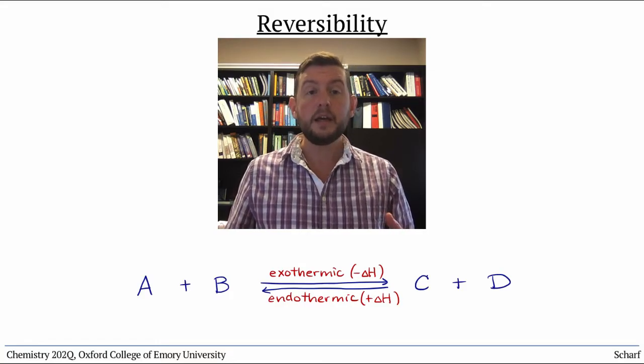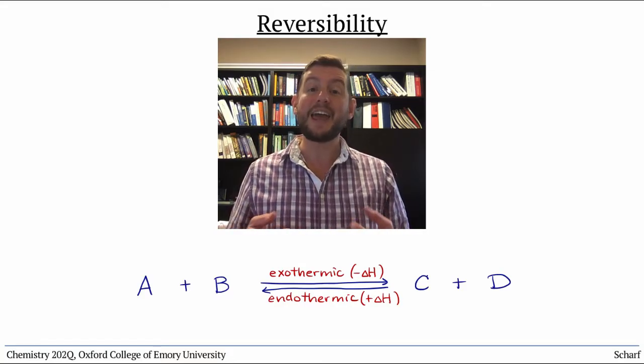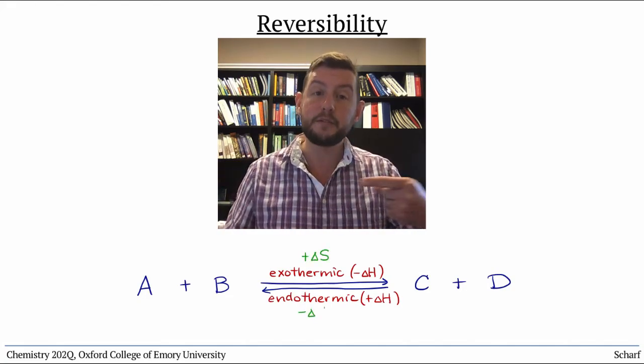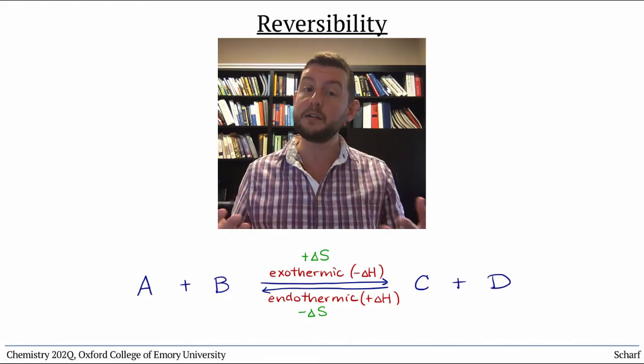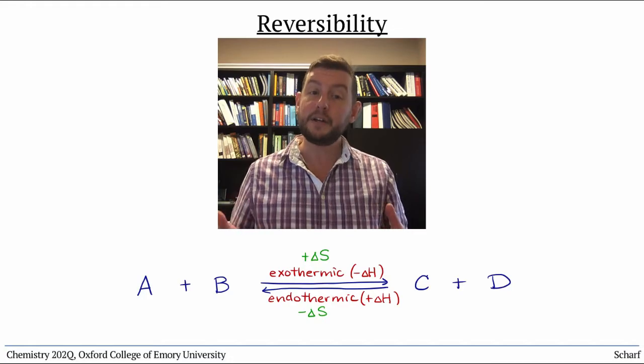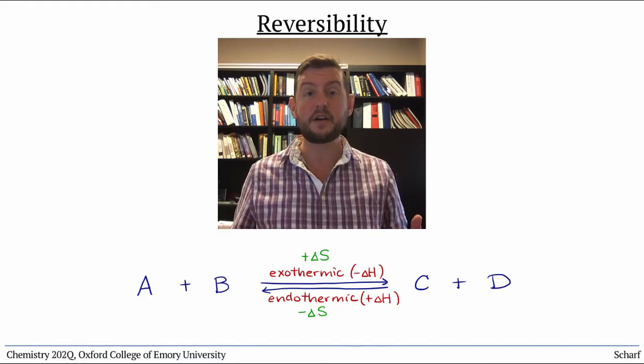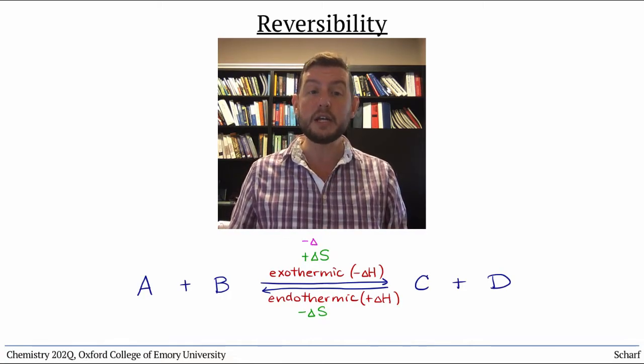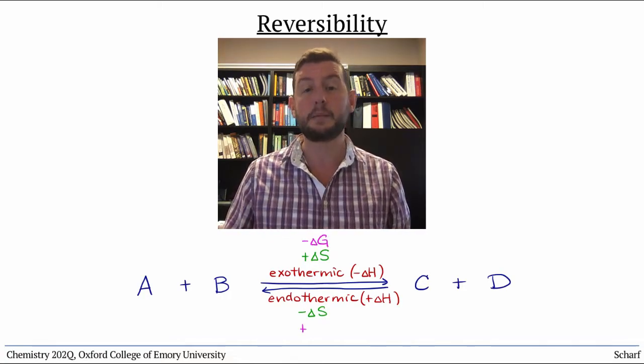Similarly, if a particular reaction is entropically favorable in the forward direction, then its reverse is entropically unfavorable, but with the same magnitude. And if delta H and delta S are of opposite signs for reverse reactions, that means that delta G must also be of opposite sign.